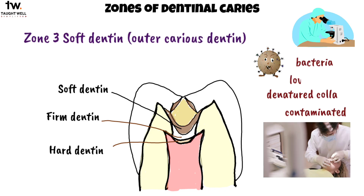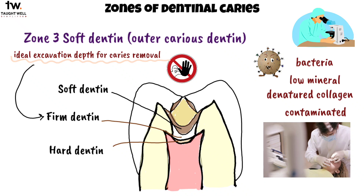The third zone is soft dentin or outer caries dentin. Its main histologic features are bacterial presence, low mineral content, and denatured collagen. It is contaminated and necrotic, and clinically can be easily removed with a hand instrument. This zone must be removed during tooth preparation as it cannot be remineralized, and its removal helps prevent further spread of the infection. The ideal excavation depth for caries removal is until firm dentin is reached, as it is a natural barrier against bacteria and acids.